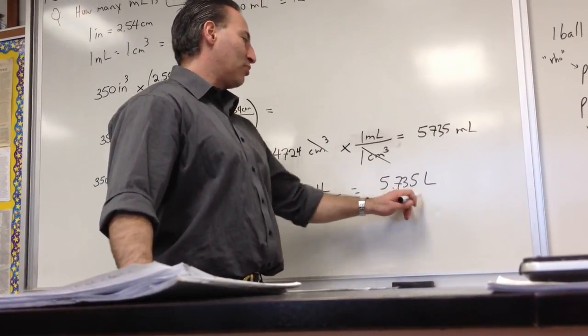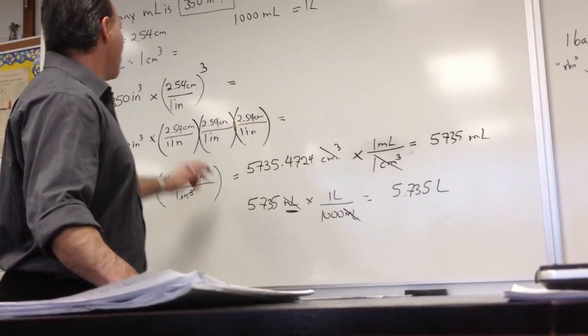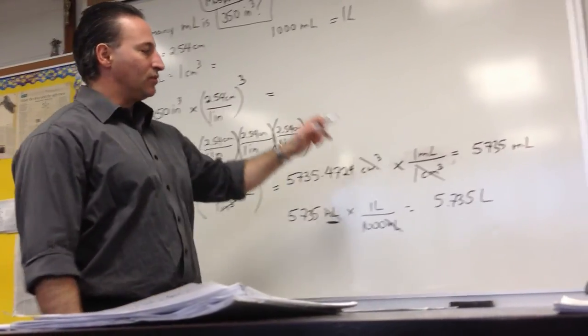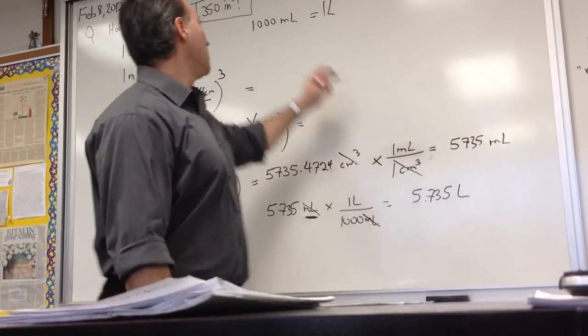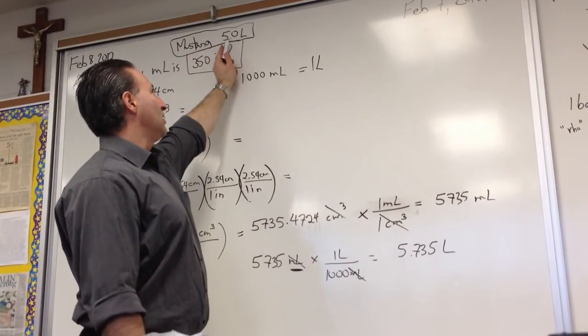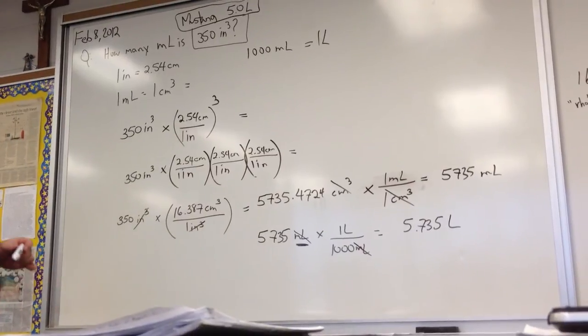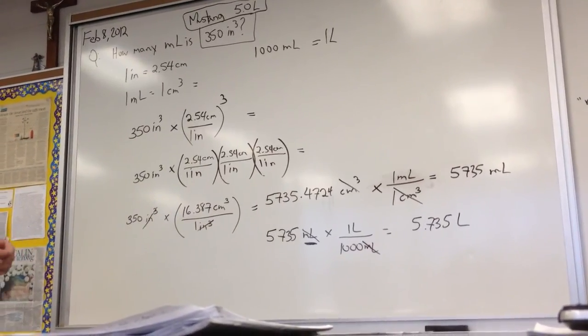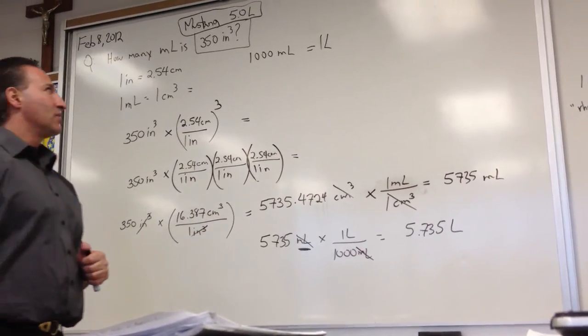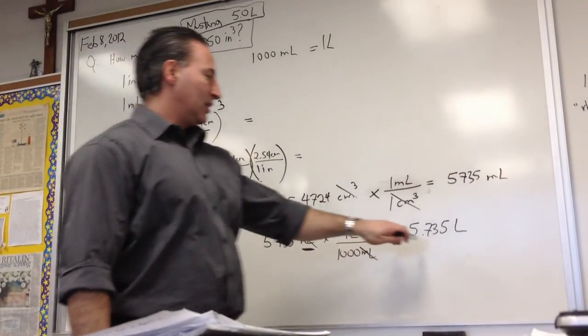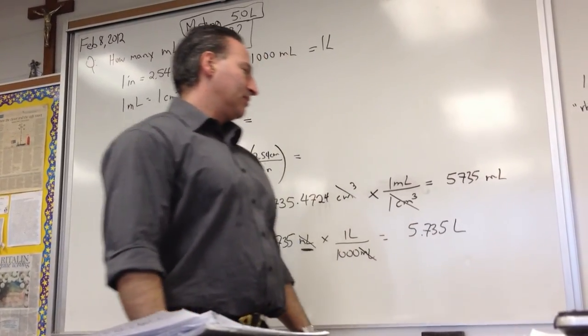Final answer is 5.735 liters. So 350 cubic inches is equal to 5.735 liters, which is bigger than the engine in a 5.0 liter car engine. So the old engine, the 350 cubic inch, is larger than 5 liters by about 700 milliliters.